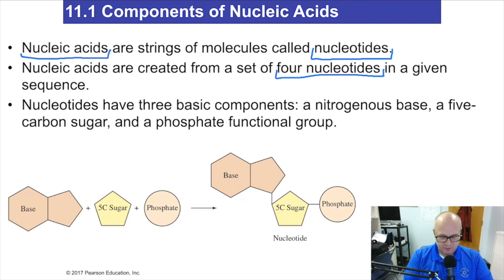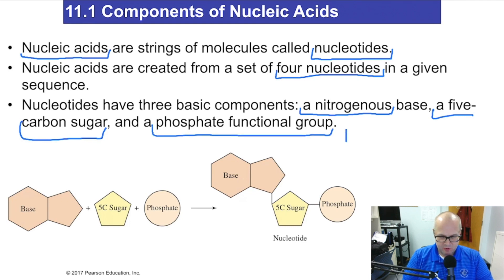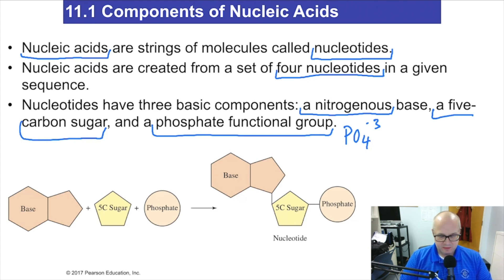Nucleotides have three components. First, a nitrogenous base — in other words, a base that contains nitrogen. Second, a five-membered carbon sugar: ribose or deoxyribose are the sugars we're going to talk about. And third, a phosphate group. Phosphate, remember, is PO4 minus three. That's a phosphate. DNA will show us how phosphates interact in these nucleotides.